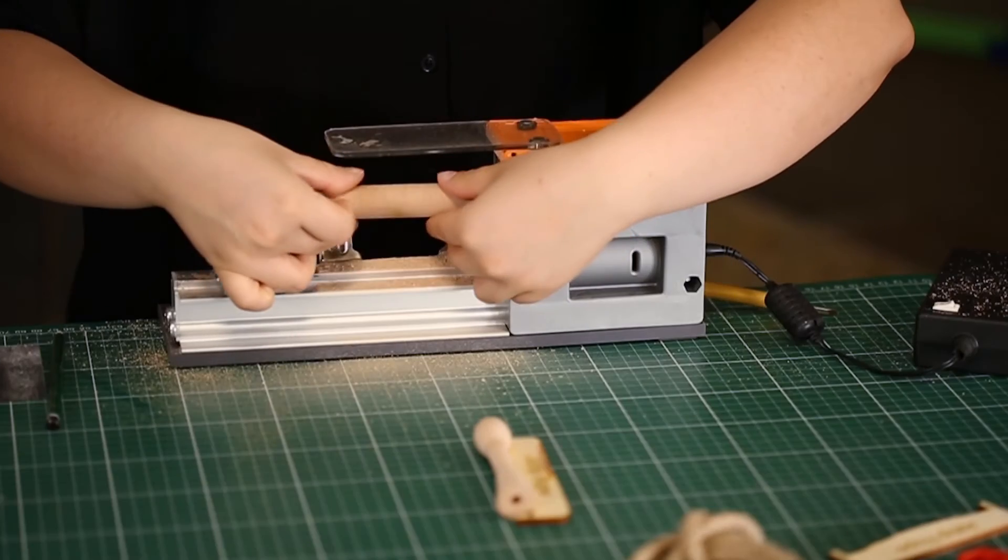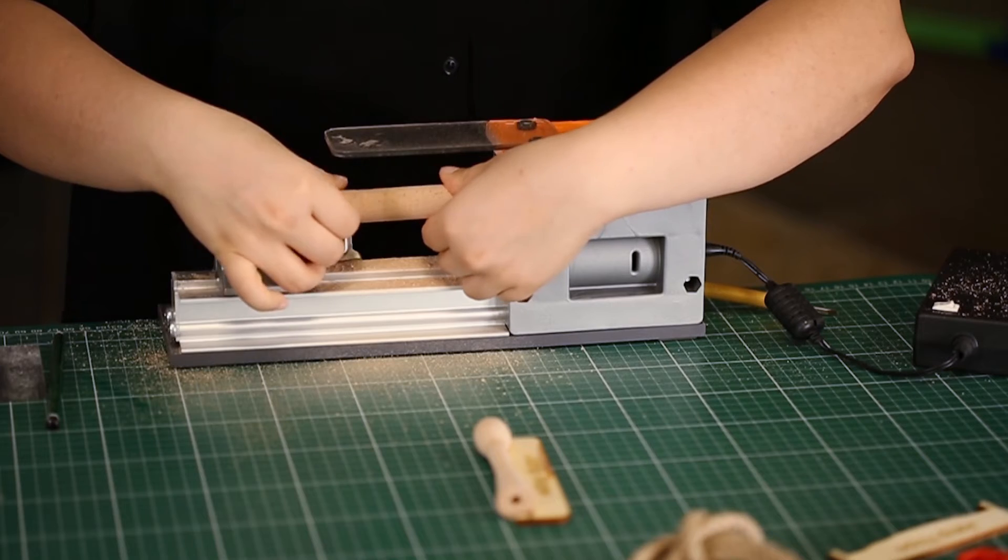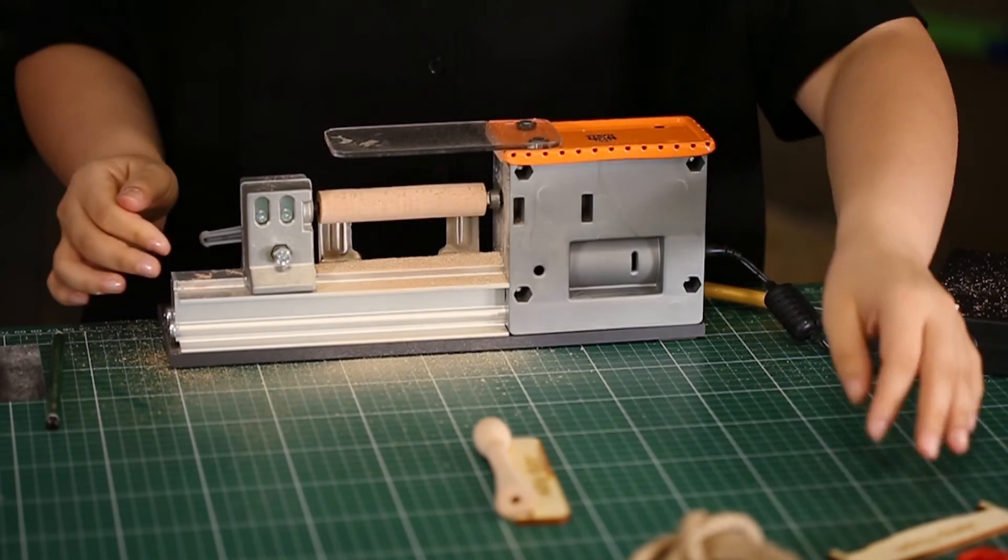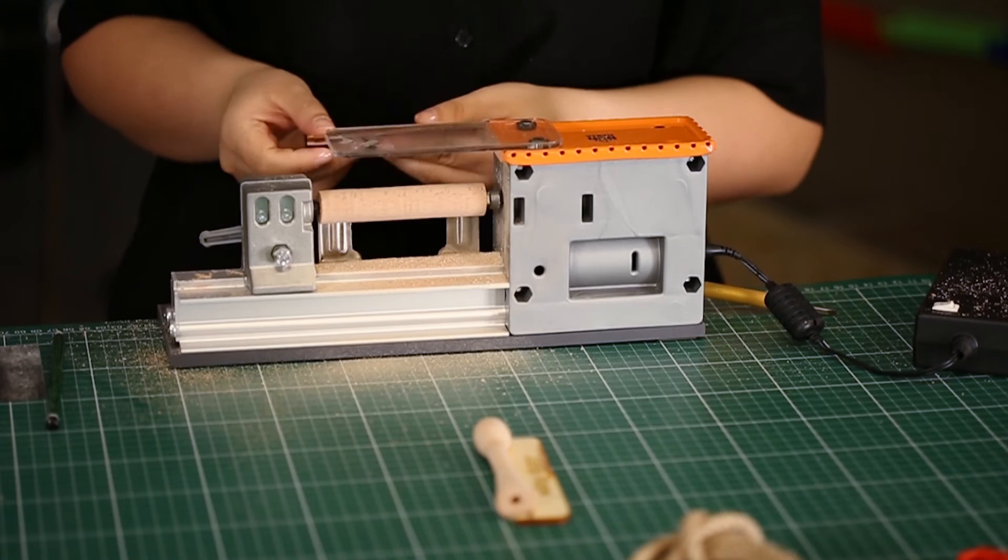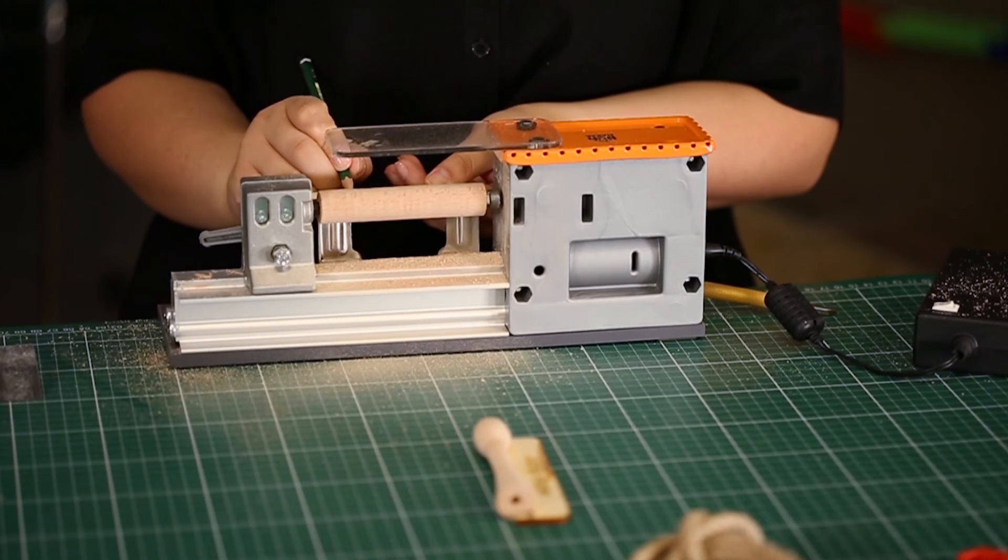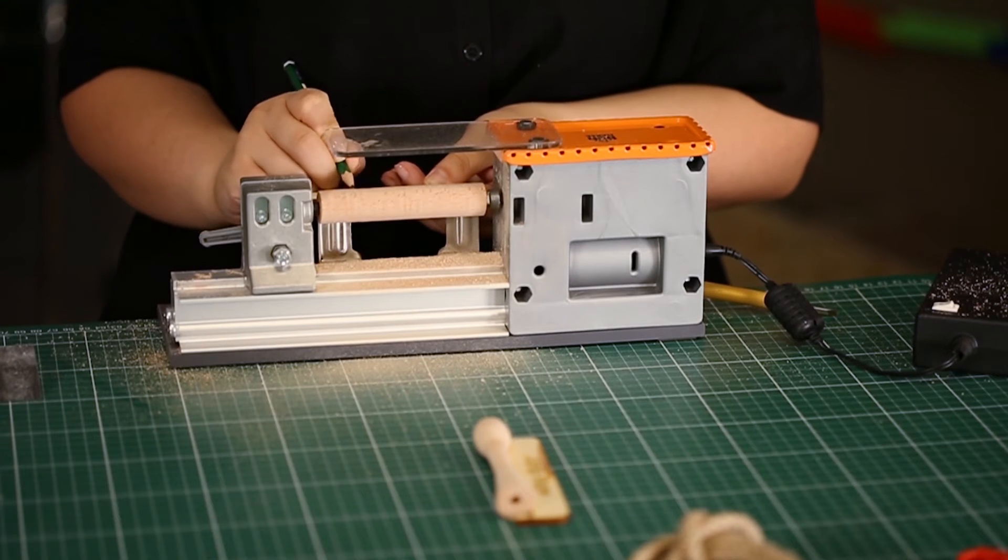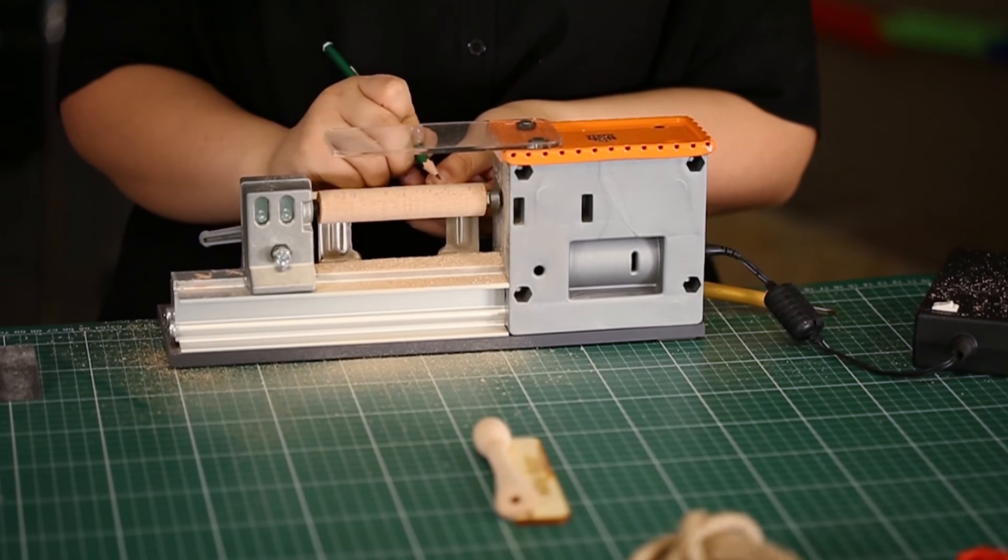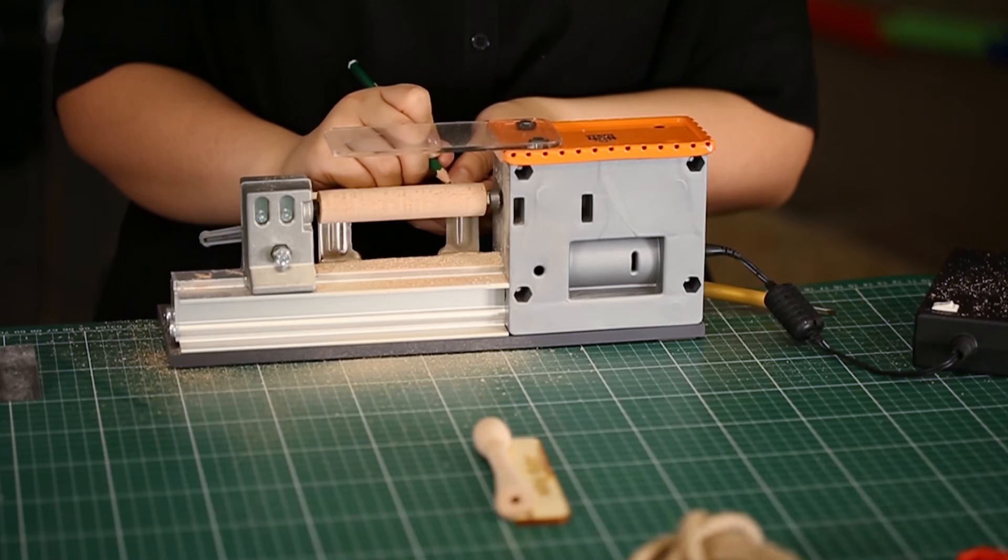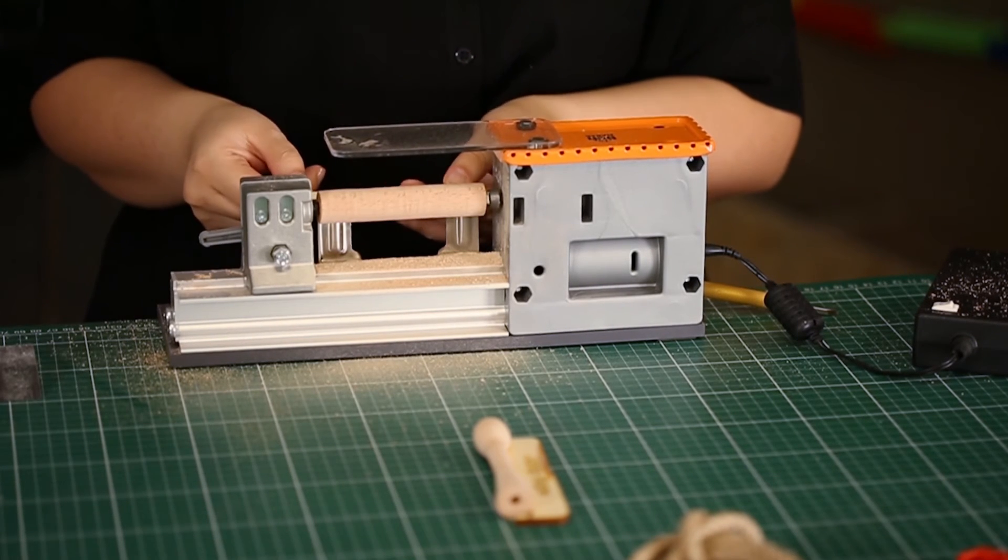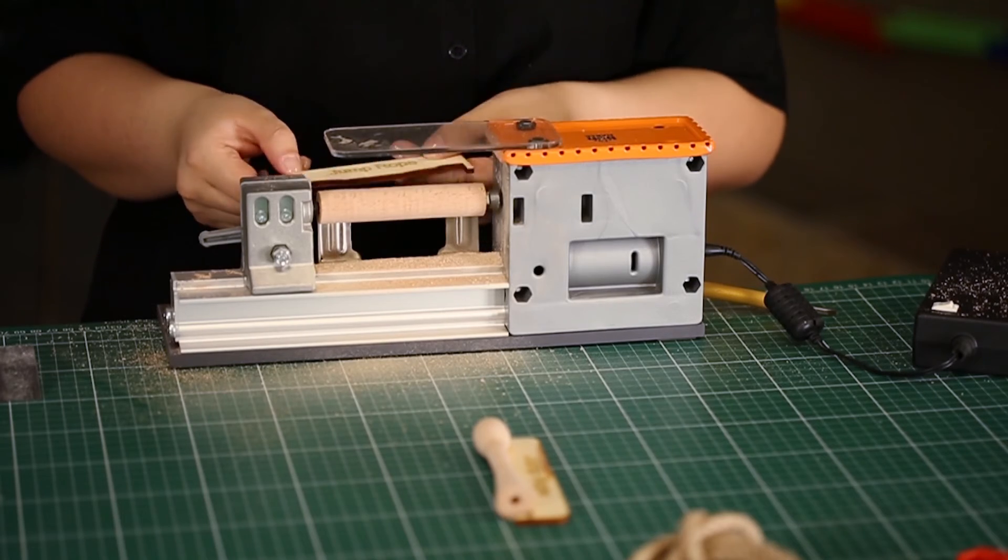Now, we can continue with the second cylinder. We are placing our second cylinder and we will repeat all the processes for the second one, like drawing reference lines. If we draw lines, we can start shaping now.